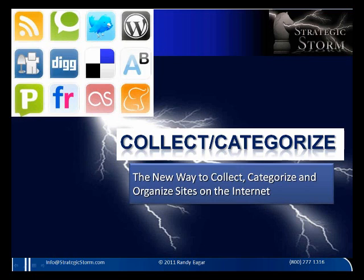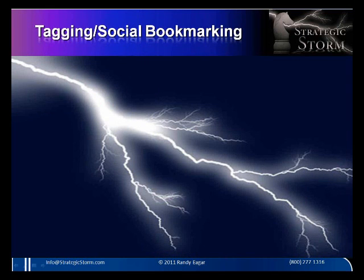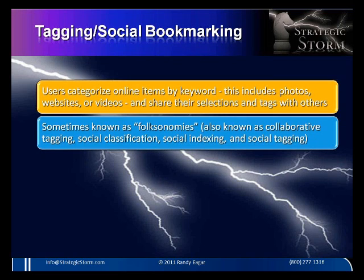Let's take a look at Phase One: collecting and categorizing your websites. This is the new way to collect, categorize, and organize sites on the internet. Rather than clicking on the bookmark icon in your web browser, we're going to see how to do it intelligently with tagging, social bookmarking, and search engines. Users categorize online items by keyword — this includes photos, websites, or videos — and share their selections and tags with others. These are sometimes known as collaborative tagging, social classification, social indexing, or social tagging.